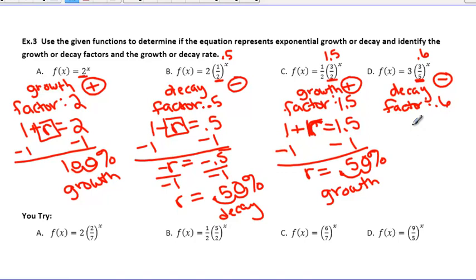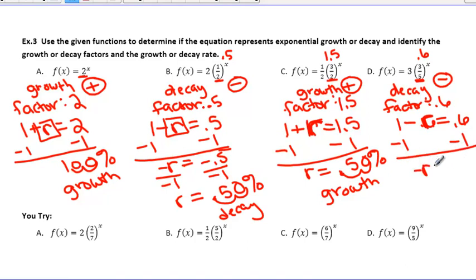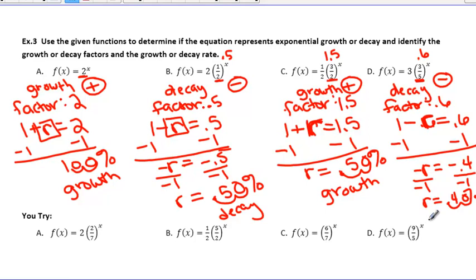Last one for this example, d. We have 1 − r = 0.6 because we're talking about decay. We subtract 1 from both sides and get −r = −0.4. We divide by −1 so that r becomes positive, and we have r = 0.4. Moving that over two places, we have 40%. Since we're talking about decay, the final answer is 40% decay.